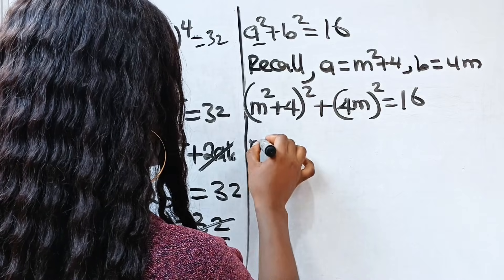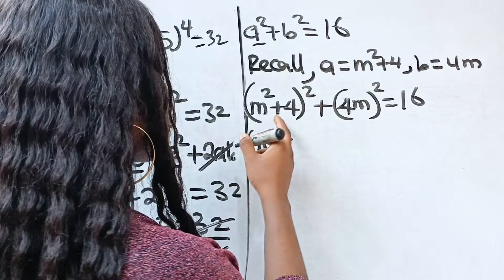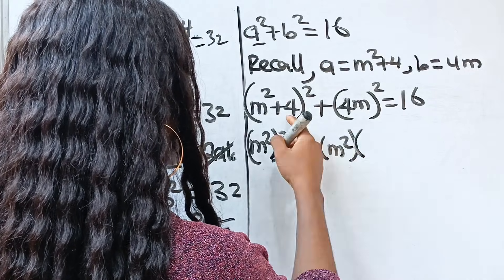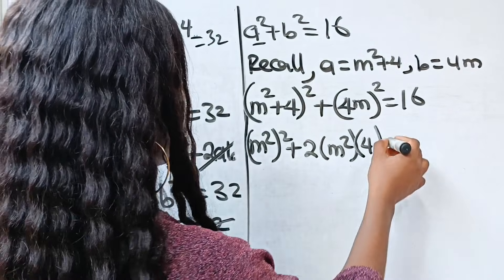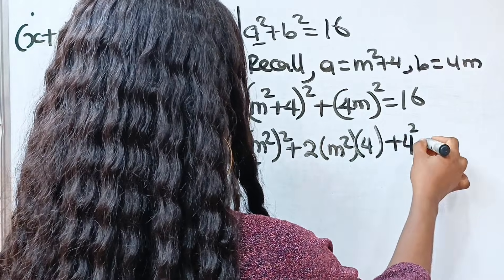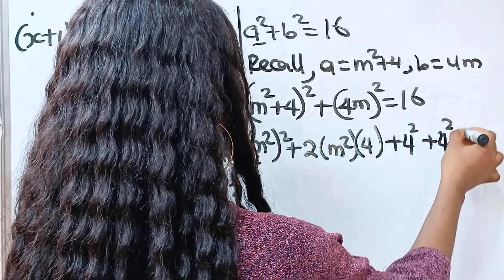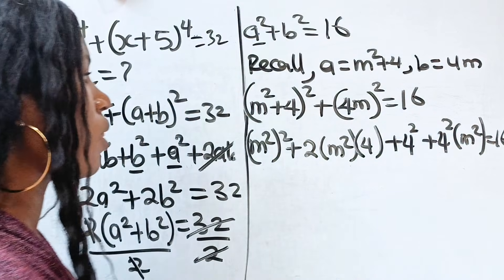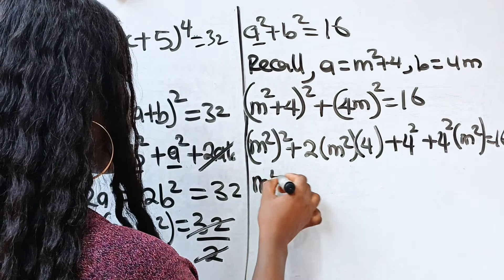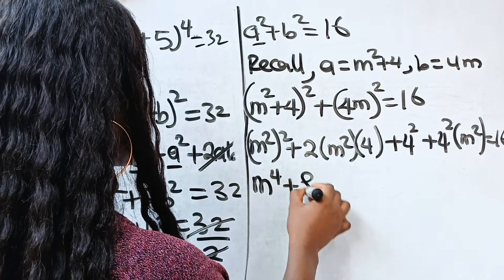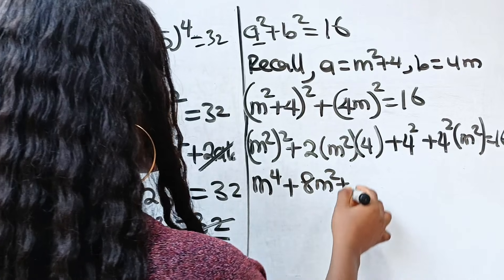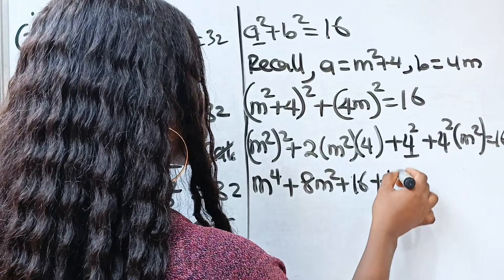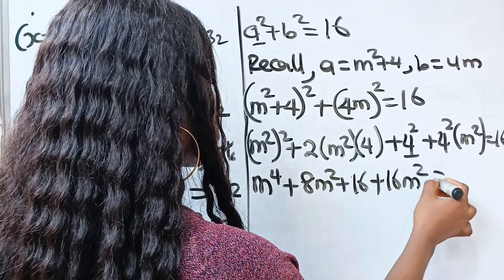Expanding (m squared plus 4) squared gives m to the power of 4 plus 2 times m squared times 4 plus 4 squared, and (4m) squared gives 16m squared. So we have m to the power of 4 plus 8m squared plus 16 plus 16m squared equals 16.